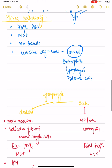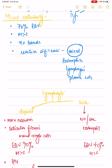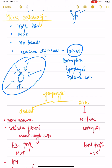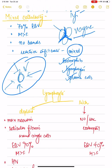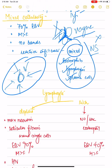In mixed cellularity, as the name suggests, the infiltrate around the Reed-Sternberg cell will be mixed cellular — there will be eosinophils, lymphocytes, and plasma cells. In mixed cellularity you might see a vague nodularity, but unlike nodular sclerosis, the collagenous bands dividing the nodules are not present. If collagen bands are present it becomes nodular sclerosis. If there are just nodules with no bands and a mixed infiltrate, it is called mixed cellularity. Males are more common than females.